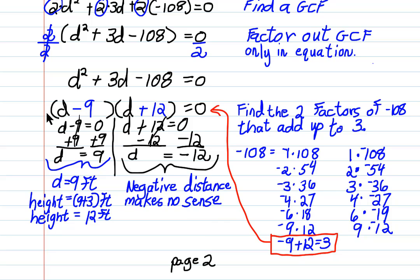So I take my negative 9, I put it in here, and it becomes minus 9. I take my positive 12 and put it in here, and it becomes plus 12. So I have d minus 9 times d plus 12 equals 0.